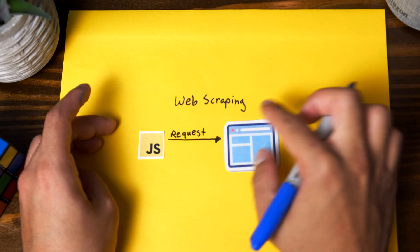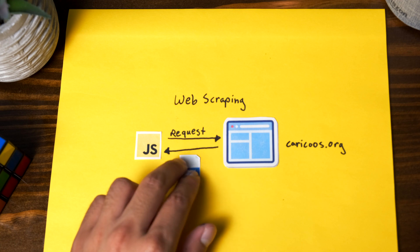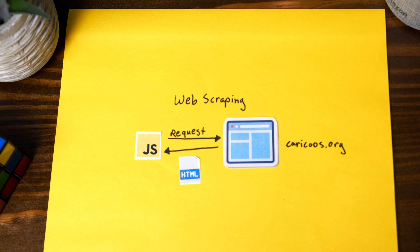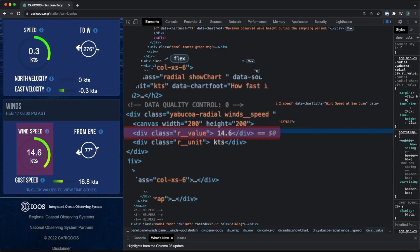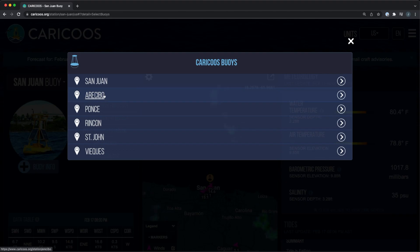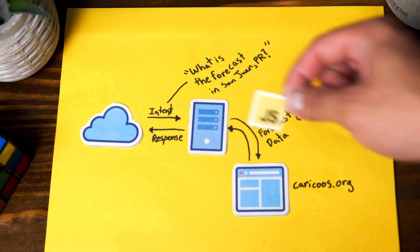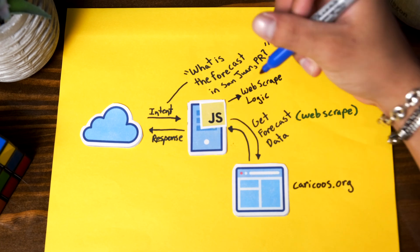I was going to show you guys my exact web scraping process for this project, but I think that might be better suited for a separate video. Essentially what happens is that your code makes a request to a given web page, which retrieves the HTML contents of that page, processes that HTML, and then looks for the data points that you need within the HTML. I followed this process to retrieve the wave height, wave period, wave direction, wind speed, and wind direction data points for two different regions — Arecibo and San Juan in Puerto Rico — from the Caricus website. Now we would have to take this logic and put it in a listening web server so that whenever the user asks for the forecast to an Alexa speaker, it can then communicate with that server. The server would then get those data points with the web scraping logic and send back the response so that the speaker can tell the forecast to that user.